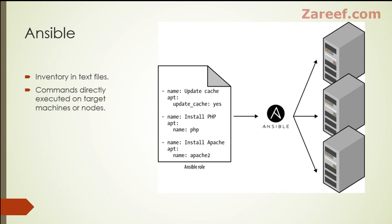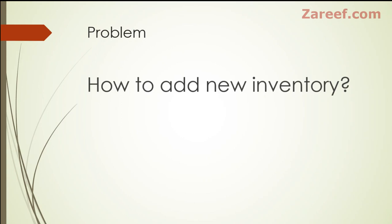In the Ansible kind of system, which is agentless, the inventory — the list of machines or nodes — is maintained in normal text files on our workstation. Whenever we execute commands or playbooks, they take input from those text files and execute those commands on the target machine.